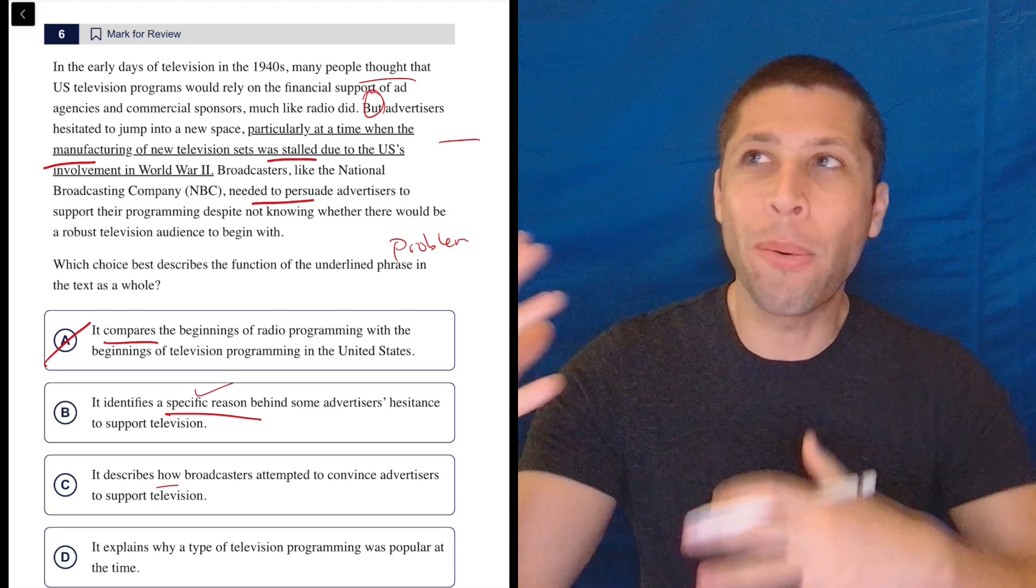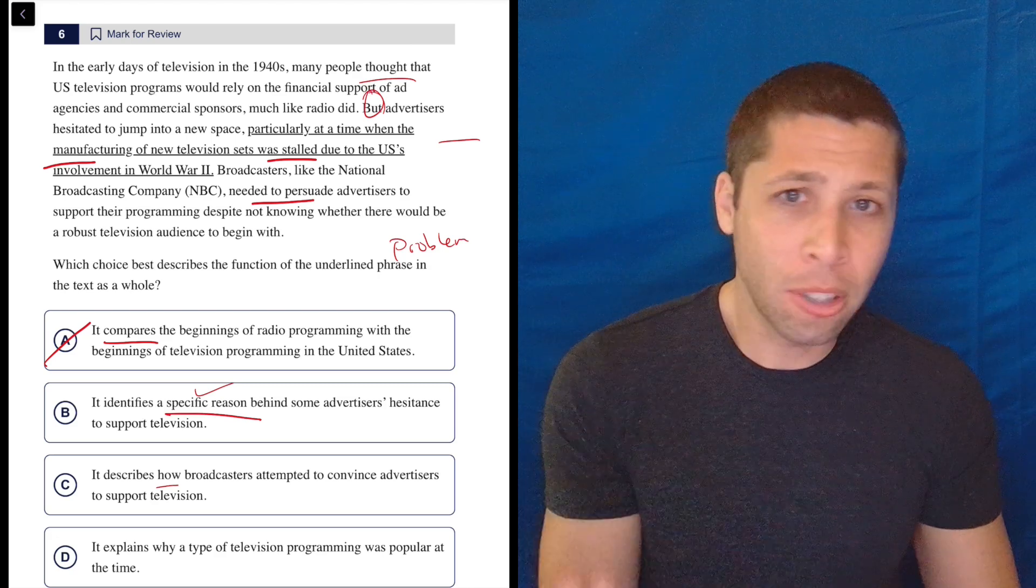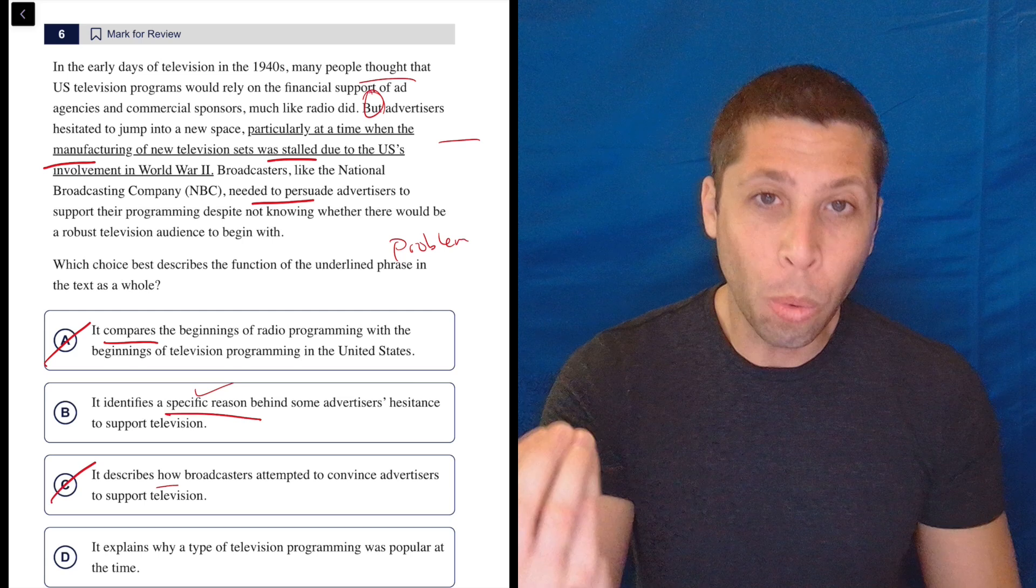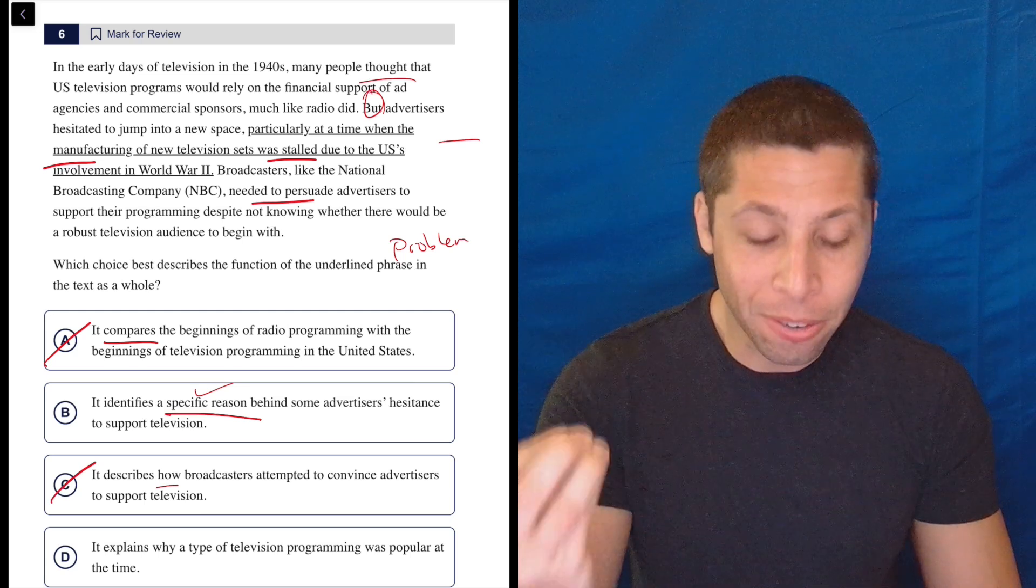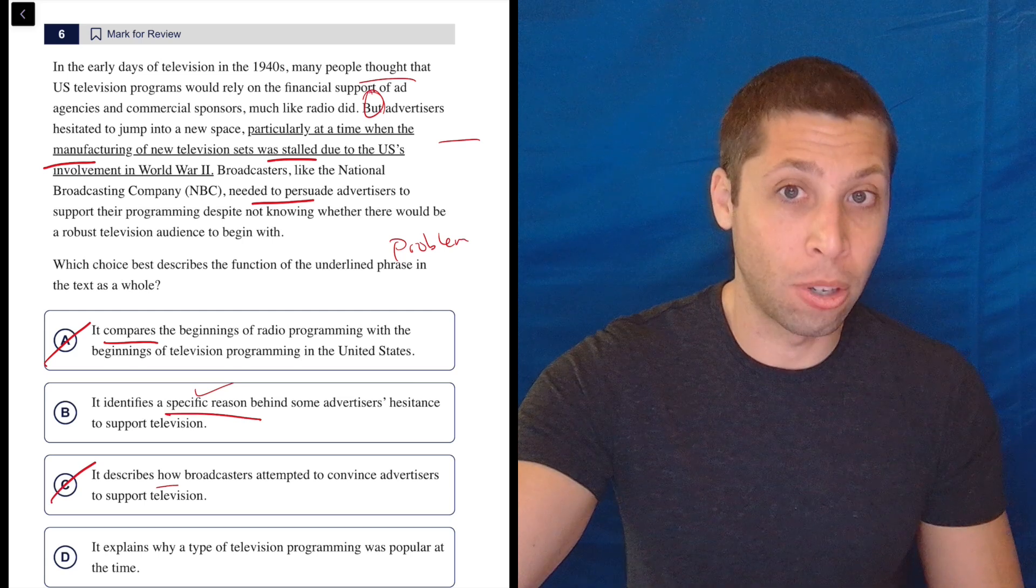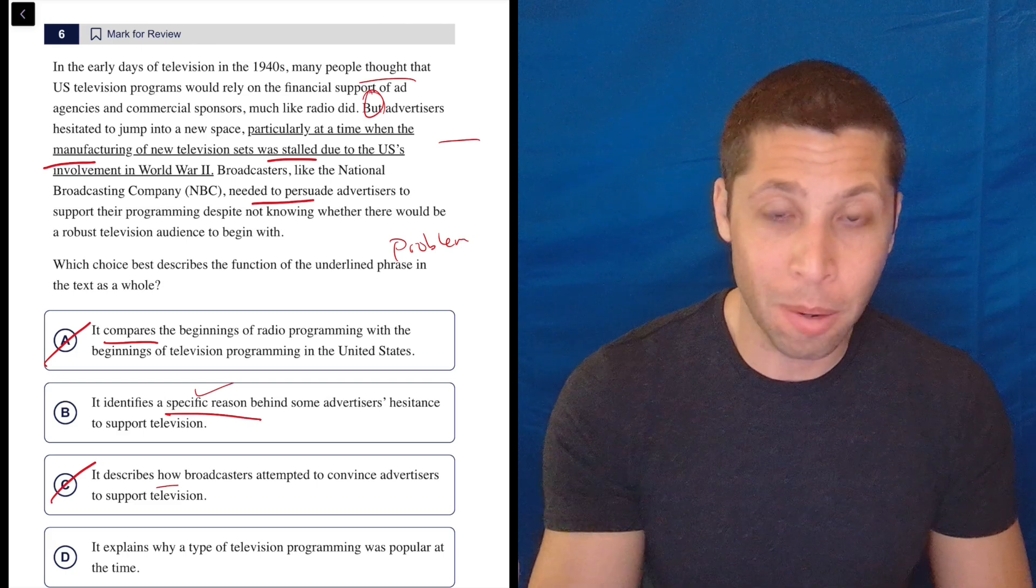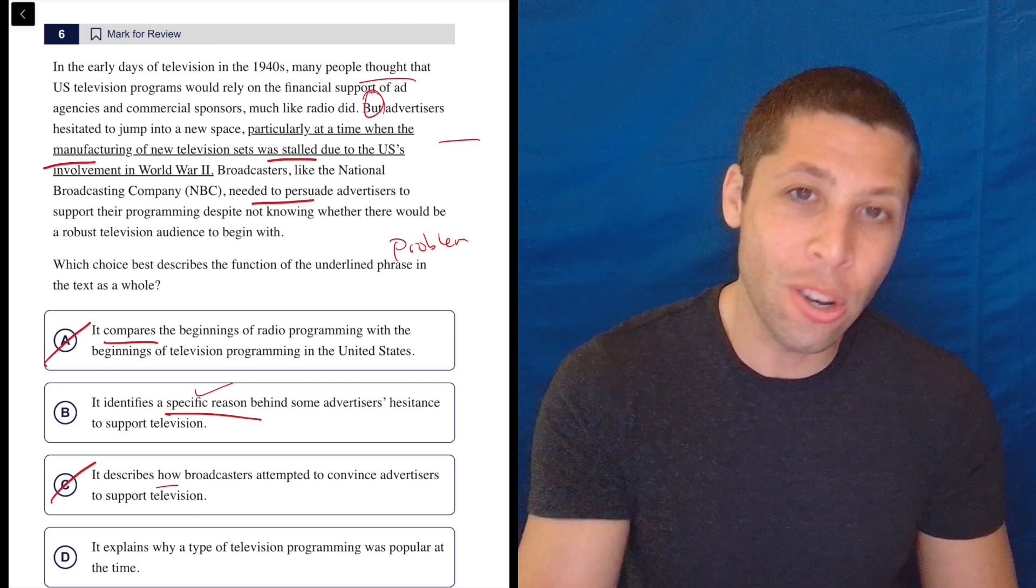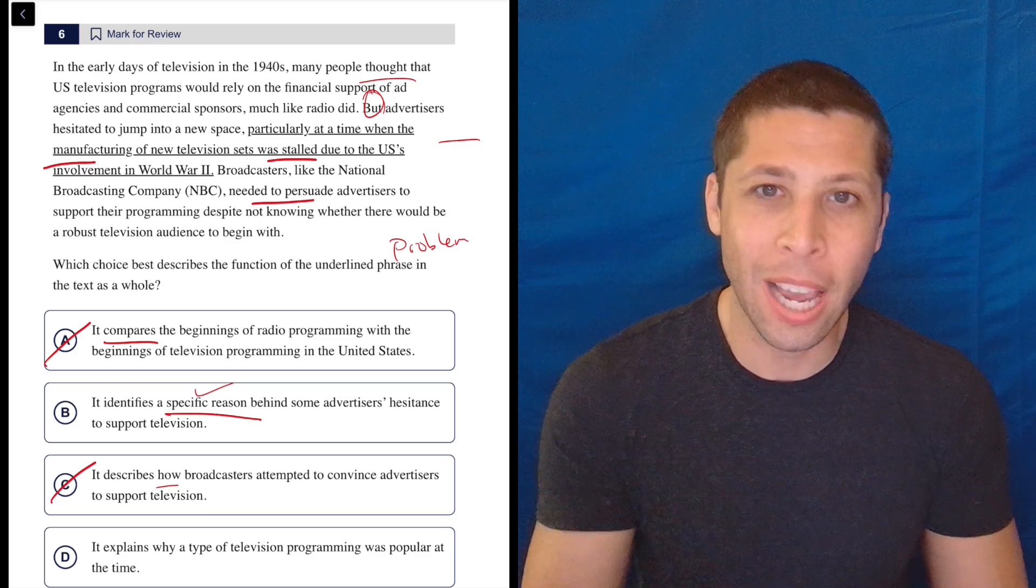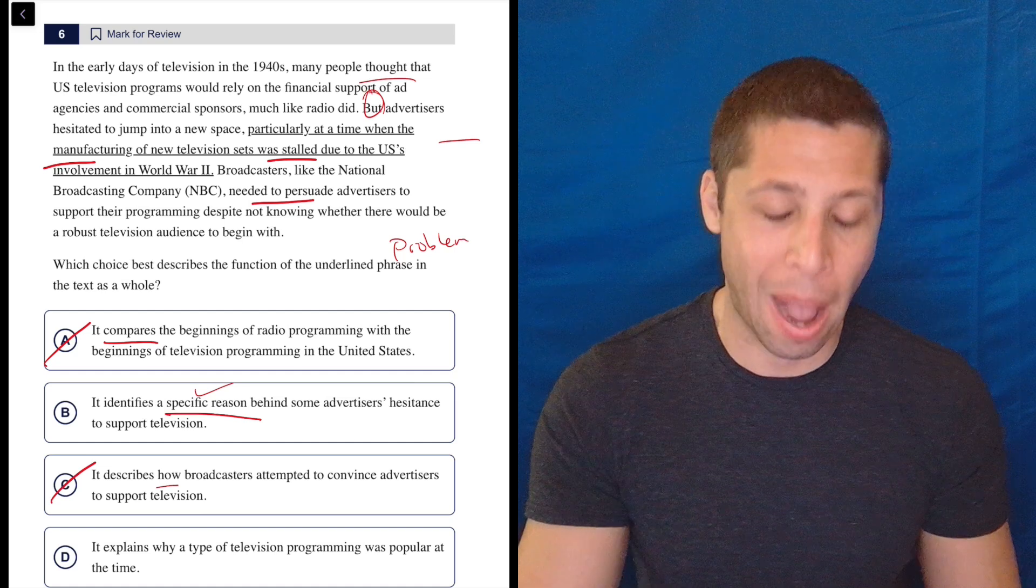And so if they were asked about the passage as a whole, what is the main purpose of the passage, I would still be able to get rid of this choice because the word how here is not right. They say maybe that broadcasters attempted to convince them, but I don't get the how, and the how is really important. And so these words, you've got to notice them when you see them in answer choices. They can really help you decide whether you've got a real live answer that could work or it's just a trap.